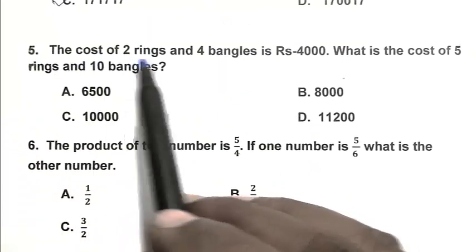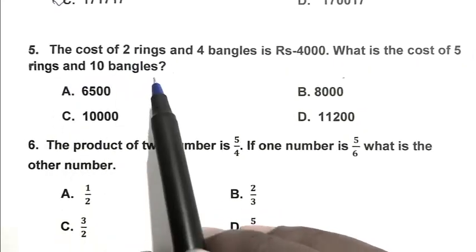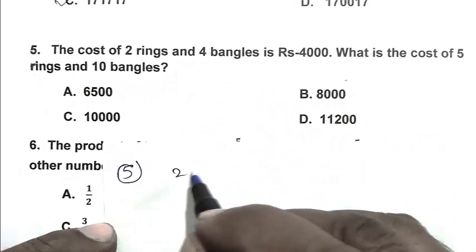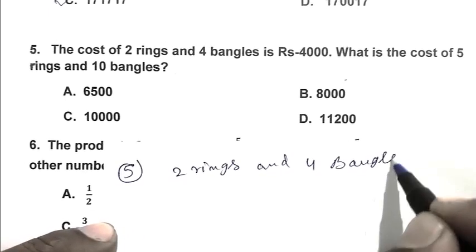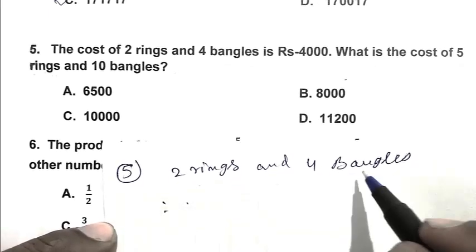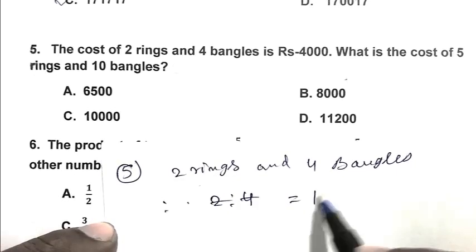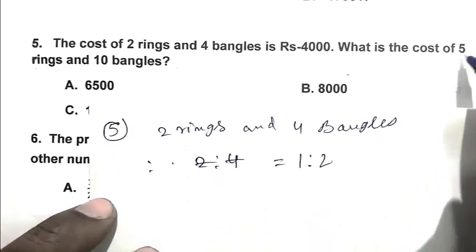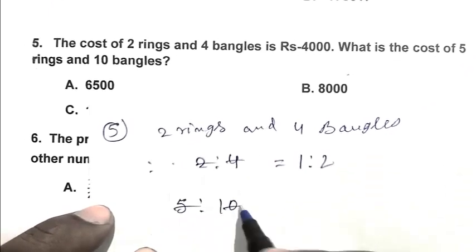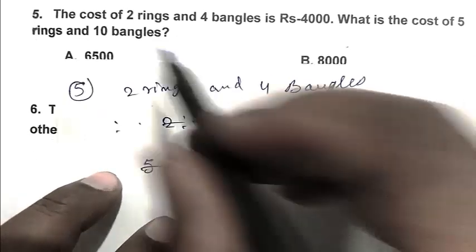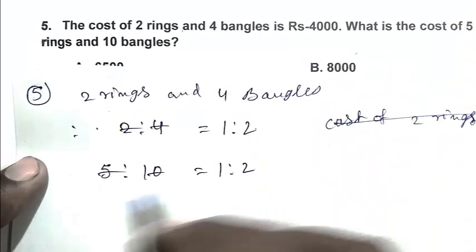Question number 5. The cost of 2 rings and 4 bangles is Rs 4000. What is the cost of 5 rings and 10 bangles? Here friend, 2 rings and 4 bangles. So the ratio of rings and bangles is 2 ratio 4, that is 1 ratio 2. And here, the ratio of rings and bangles is 5 ratio 10, that is 1 ratio 2. In both cases, the ratio of rings and bangles are the same.